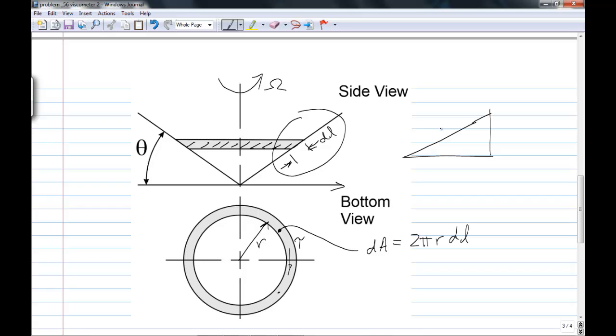But dL and dr are related quite easily. If you draw a triangle where this is dL, and this is dr, and of course that's the angle theta, then you can see that dr equals dL cos theta. And we can make the substitution. And you get 2 pi r dr over cos theta. We're converting this to dr because we want to integrate with respect to the coordinate r from 0 to R.